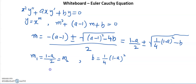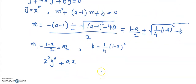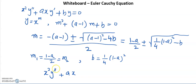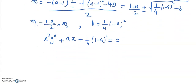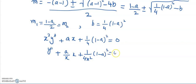We can rewrite the differential equation: x²y'' + axy' + by = 0, where b = (1−a)²/4. In standard form, this becomes y'' + (a/x)y' + (1−a)²/(4x²) y = 0.